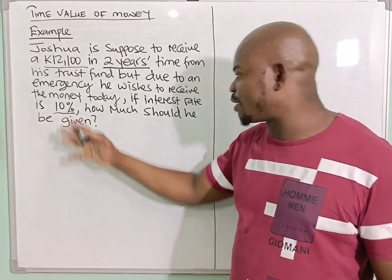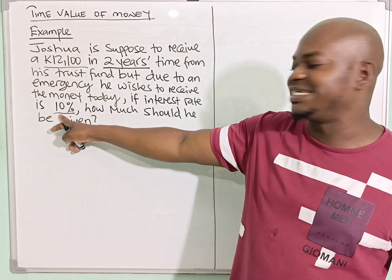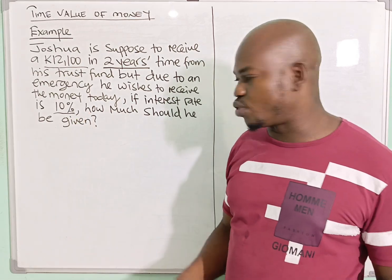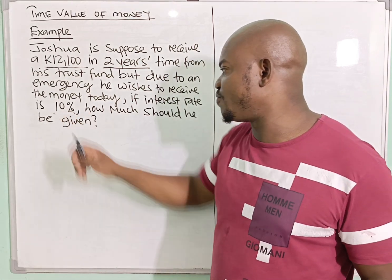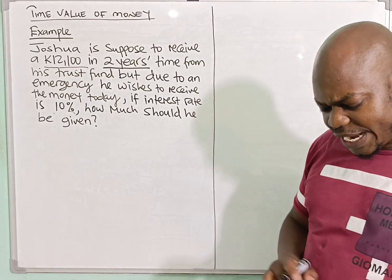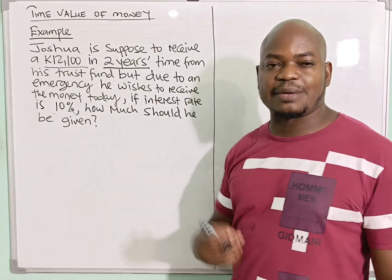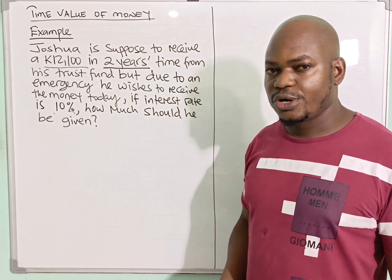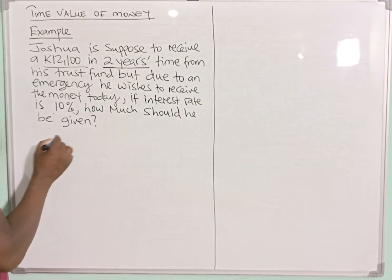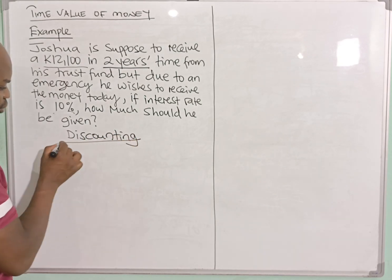So we are looking at the amount which can be invested today at 10% and grows to $2,100 in two years' time. The assumption is that 10% has already factored in the aspect of risk, the aspect of inflation, and also the lost opportunity to invest — so everything has been factored into this percentage, and the prevailing interest rate basically reflects inflation and risk. The amount he is supposed to receive in two years' time we shall call the future value; the amount he is supposed to receive today we shall call the present value. What we are calculating is the present value, and to get it we are going to discount the future value — we call this process discounting.